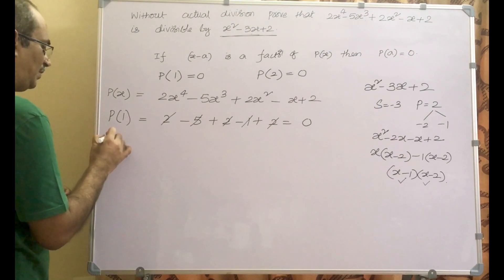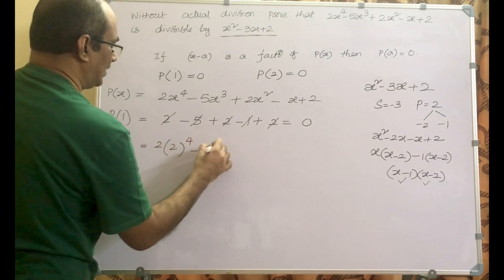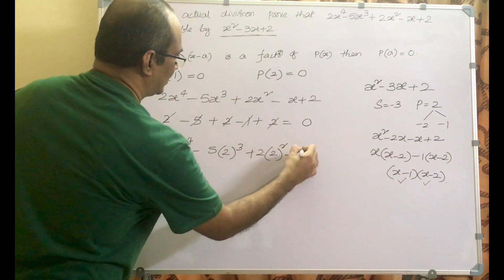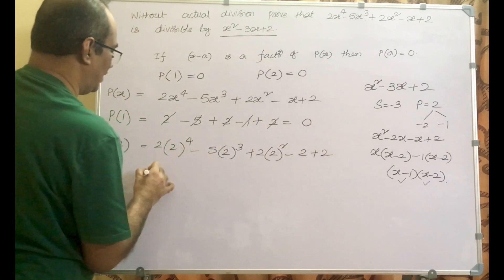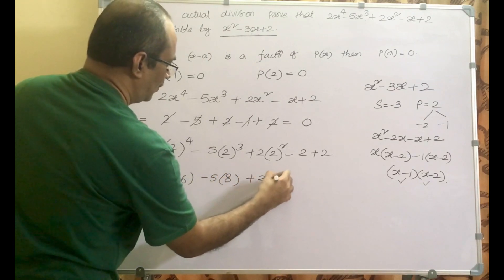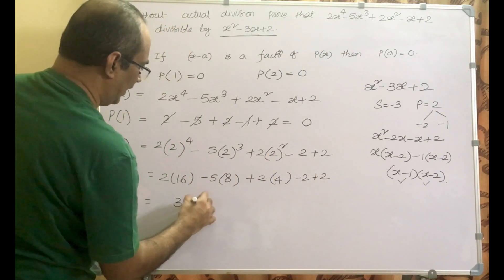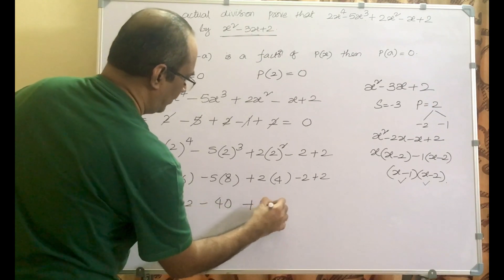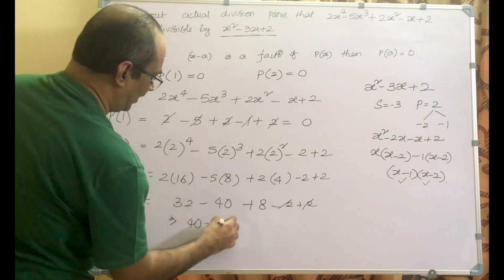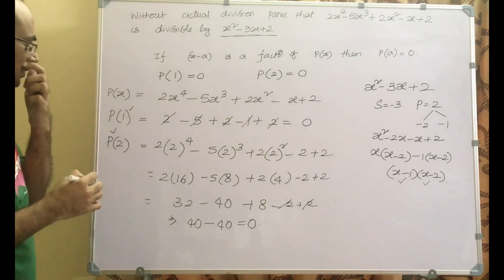Now let us find p of 2. Substituting: 2 into 2 to the power 4 minus 5 into 2 cube plus 2 into 2 square minus 2 plus 2. That gives us 2 into 16 minus 5 into 8 plus 2 into 4 minus 2 plus 2, which is 32 minus 40 plus 8, and minus 2 plus 2 cancel. So 32 plus 8 is 40, and 40 minus 40 equals 0. So p of 2 equals 0.